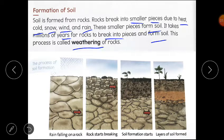I hope you understand that. The process of soil formation you can see in the picture. First stage is rain falling on rocks. Us ki baad rocks break hoona shuru ho jati hai. Us ki baad soil formation starts. And the last stage is layer of soil formed. I hope you understand that.